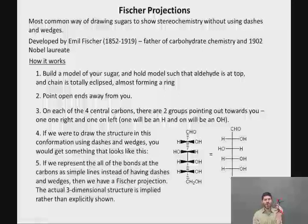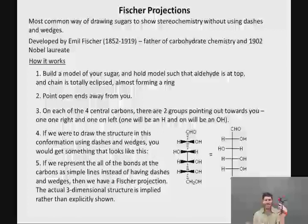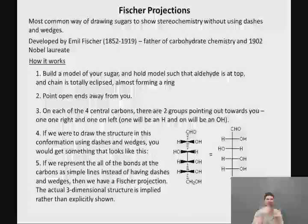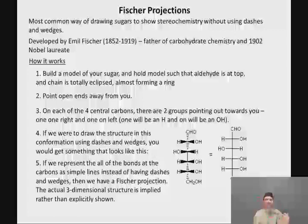Now, if we represent all of the bonds at the carbons as simple lines instead of having dashes and wedges, then we have a Fischer projection, shown on the right-hand side of your screen. The three-dimensional structure in a Fischer projection is implied, therefore, rather than explicitly shown. So one of the skills you will need to develop is being able to take a model and accurately turn it into a Fischer projection, and also take a Fischer projection and draw it out in open chain form with all of the OH's properly indicated using dashes and wedges.